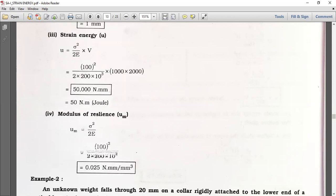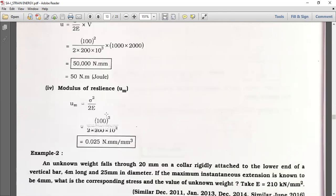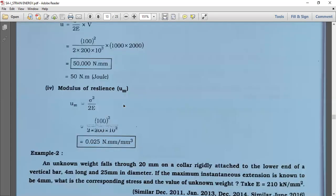Fourth, modulus of resilience. Um equals sigma square divided by 2E. Putting the values of sigma and E, we get 0.25 newton per mm cube. The units are very important because with the help of units we can consider particular things, otherwise the calculation can go wrong.